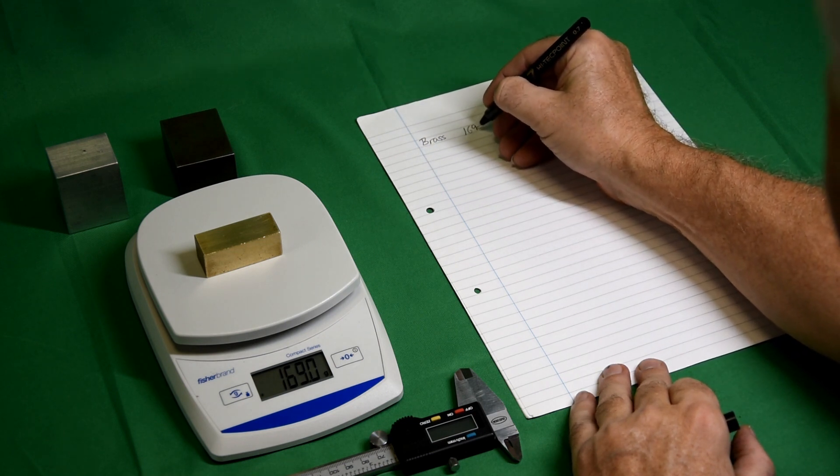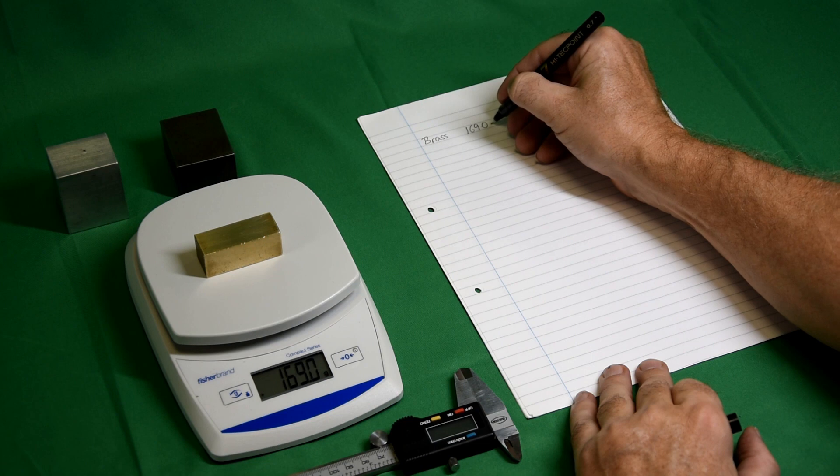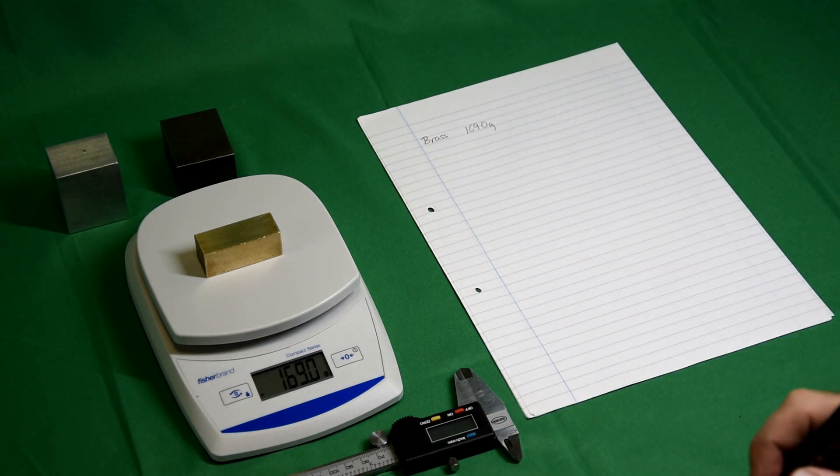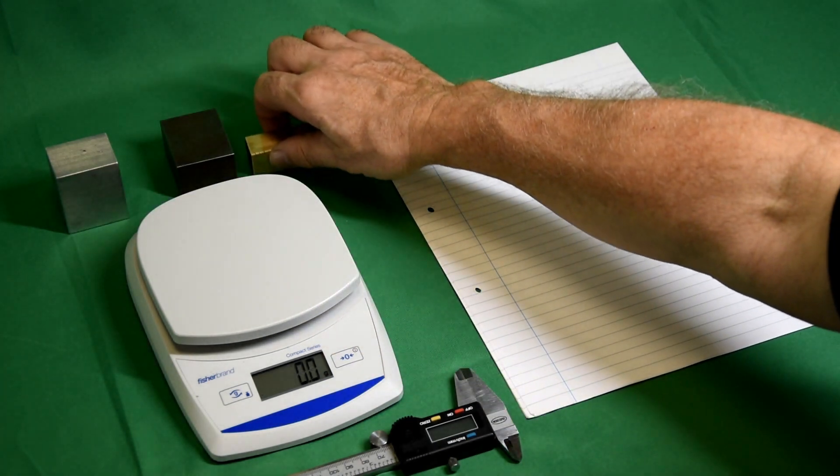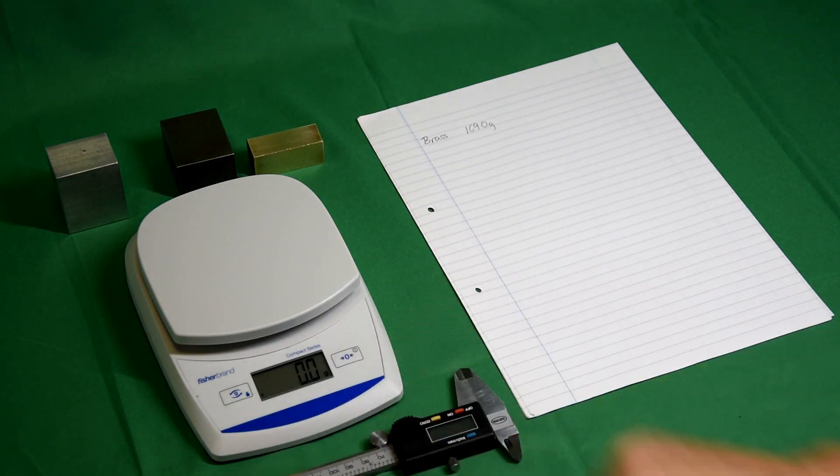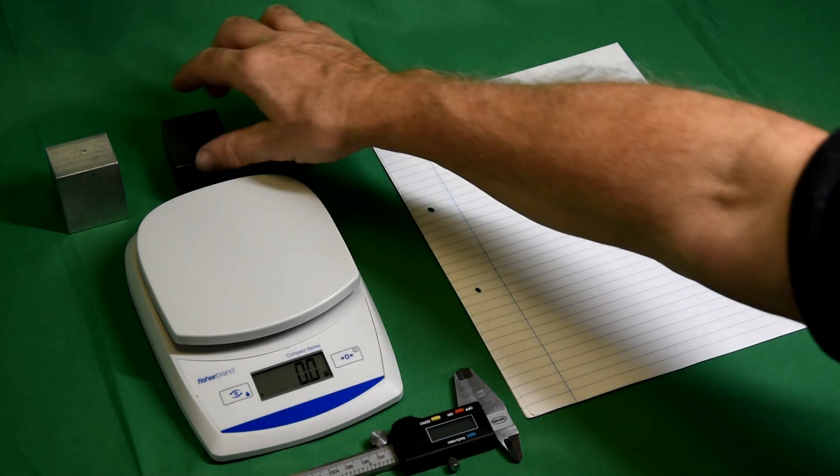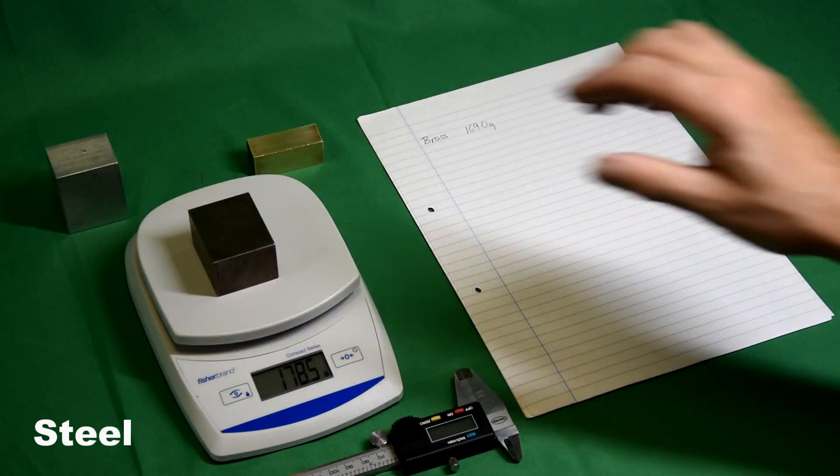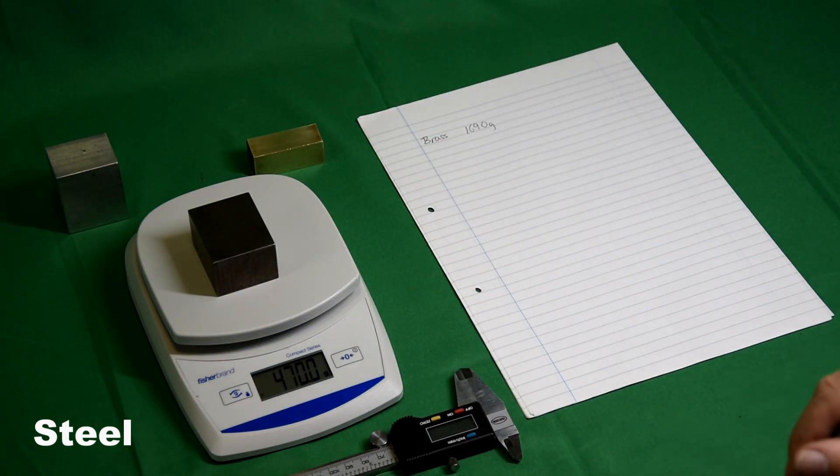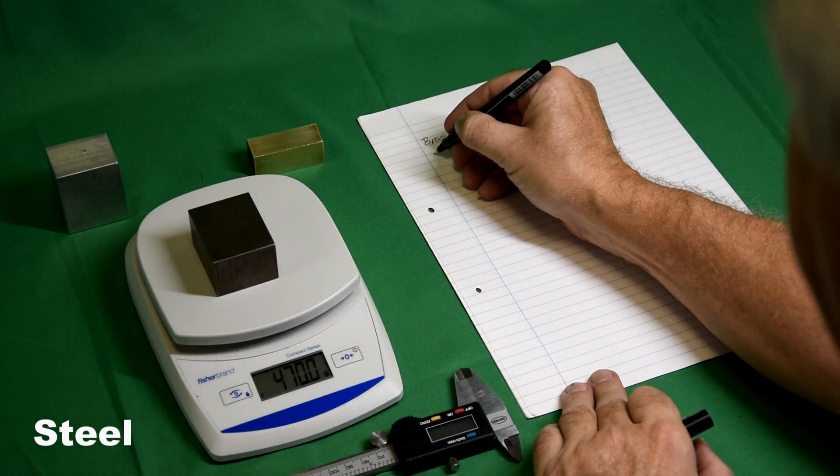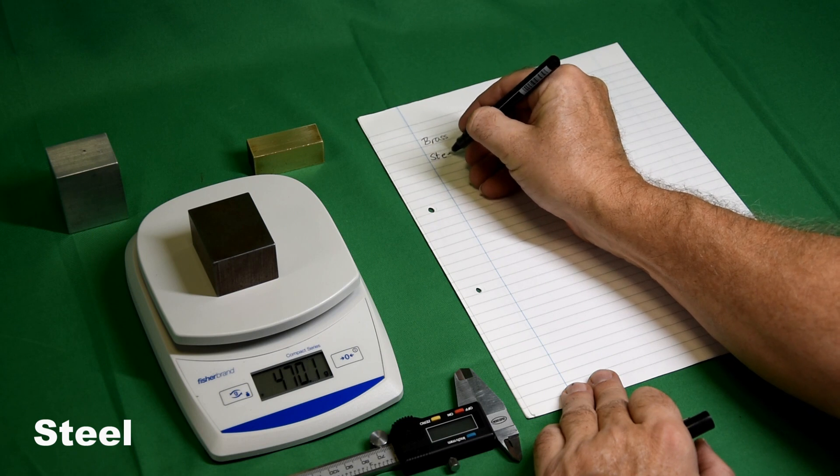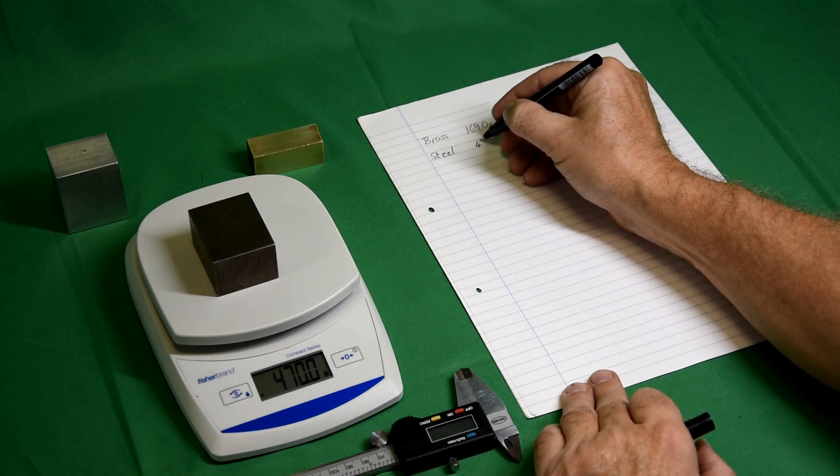Starting with a brass block of mass 169 grams. Don't forget to zero-check. The steel has a mass of 470 grams, more precisely 470.0 grams.